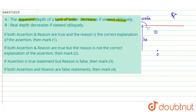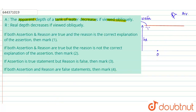In the diagram, this is the water tank. An object is placed at a height hr, which is the real height of the object. There is a water tank, we have placed an object, and we are viewing this object obliquely from air.